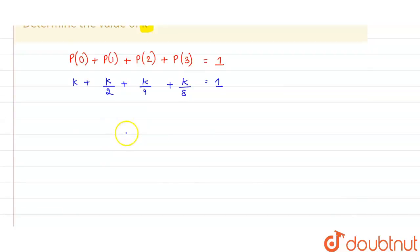LCM. So that is eight. LCM is eight k, this will be four k, this will be two k, and this will be k equal to one. Now this is